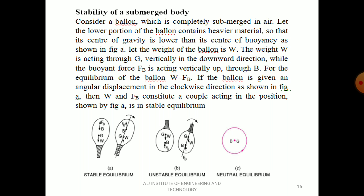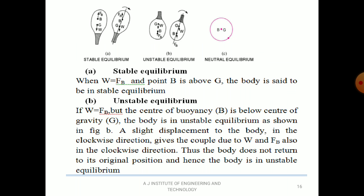For stable equilibrium: when W = FB and point B is above G, the body is in stable equilibrium. B should be above the center of gravity. Because of the weight in the lower portion, center of gravity is lower than center of buoyancy. Give angular displacement clockwise — a couple is produced in the counterclockwise direction, which brings the balloon back to its initial position. So it is stable equilibrium.